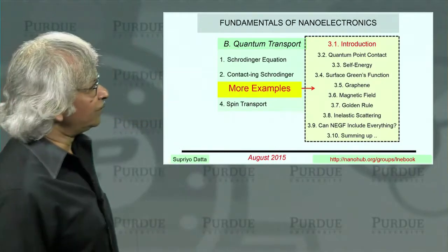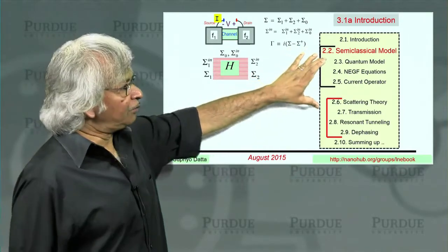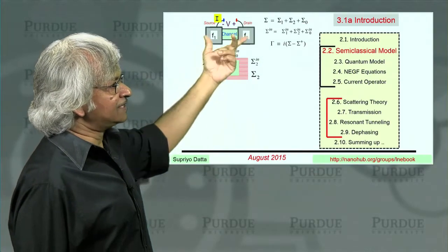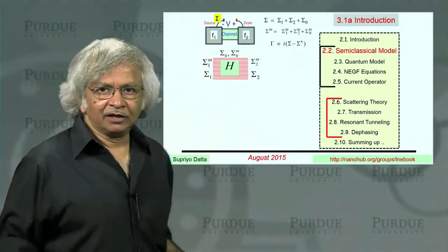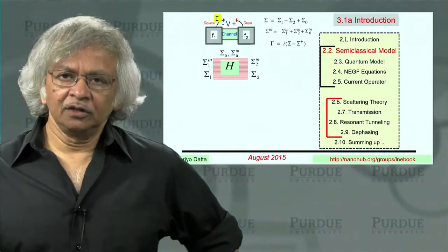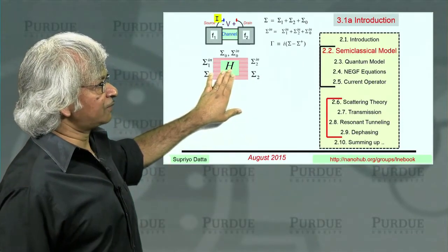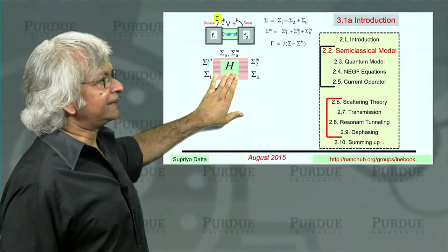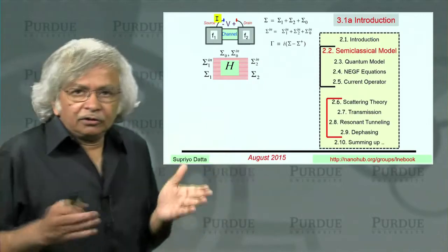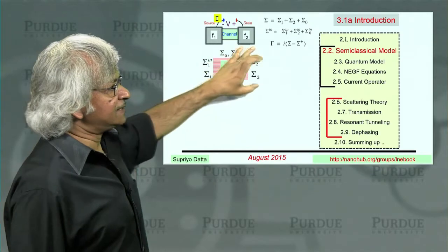Now if you remember what we did in Unit 2, like this is the outline for Unit 2. What we did there is we talked about how to include these contacts into the description of quantum transport. What you learn in traditional quantum mechanics is about the Hamiltonian H which describes an isolated channel. That's what we did in Unit 1. But Unit 2 was about how to include contacts into this description, and that comes in through these sigmas.